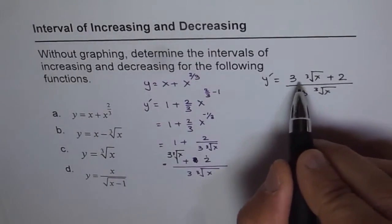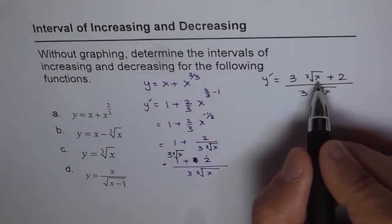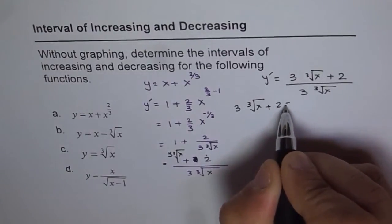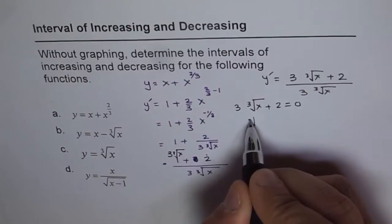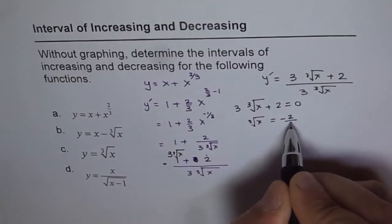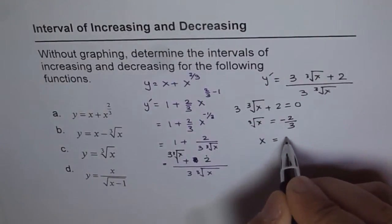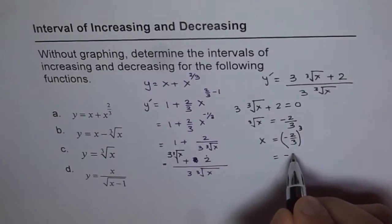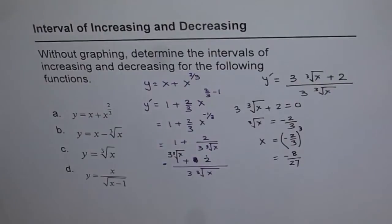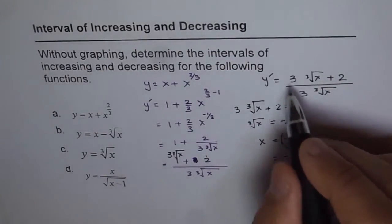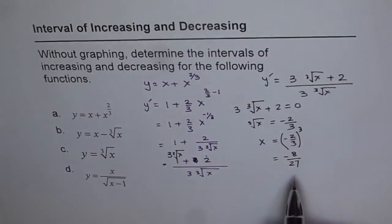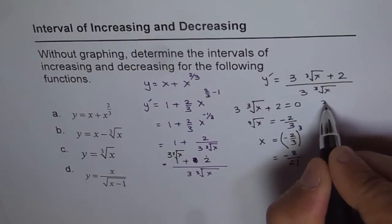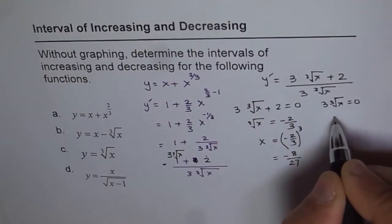From here we find where the numerator is 0. Setting 3 times cube root of x plus 2 equal to 0 means cube root of x equals minus 2 over 3, so x equals minus 2 over 3 cubed, which gives us minus 8 over 27. That is the value where the derivative is 0. The derivative is undefined when the denominator is 0, meaning 3 times cube root of x equals 0, so at x equals 0.